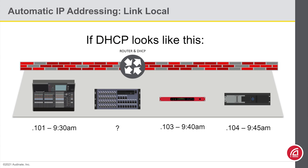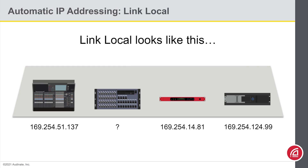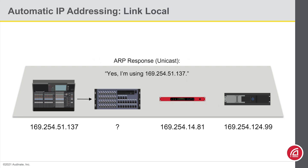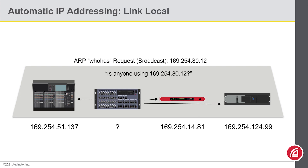So if DHCP looked like this with the router, firewall, and the whole bit, then LinkLocal looks a lot more stark. Using LinkLocal, a device joining the network will pick an address at random in the 169.254.anything range. It will then send an ARP who-has request — a broadcast message going to all ports on the network — basically asking: is anybody using this address? In this case, the first device there is using that IP address, so it will offer an ARP response saying 'yes, I'm using this address, please choose another.' The device picks another address at random and sends an ARP who-has request again.